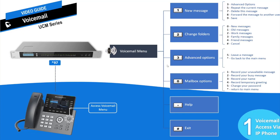Press 9 to save the message — the user will be prompted to choose a folder. Option 2 is change folders: press 0 for new messages, 1 for old messages, 2 for work messages, 3 for family messages, and 4 for friend messages.